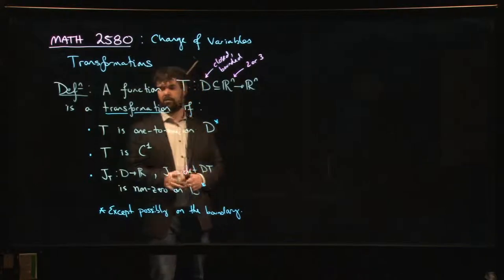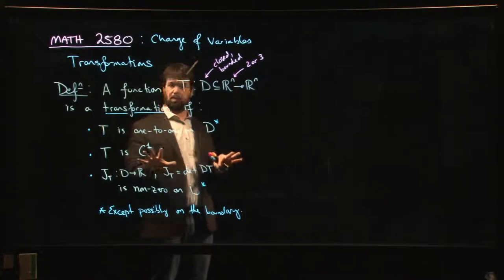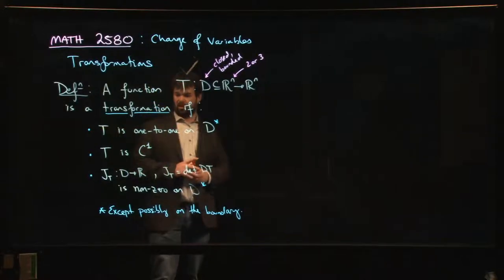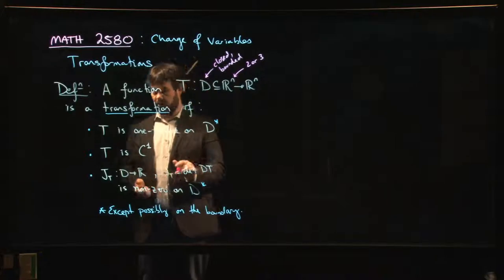There are a number of conditions that a function has to satisfy to be a transformation. It has to be C¹, so it has to be continuously differentiable. We want it to be a one-to-one function. I'll try to explain visually why this matters before we even get into integration.